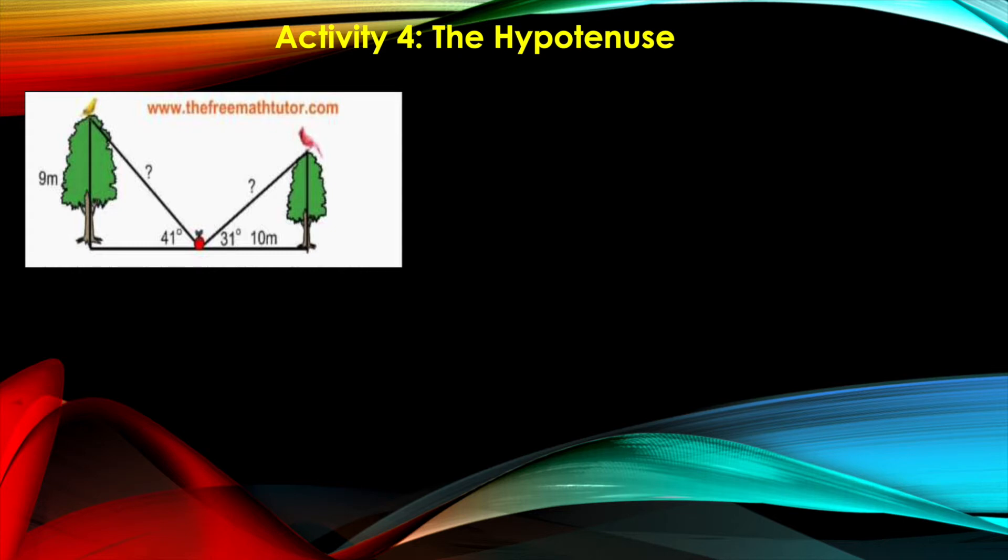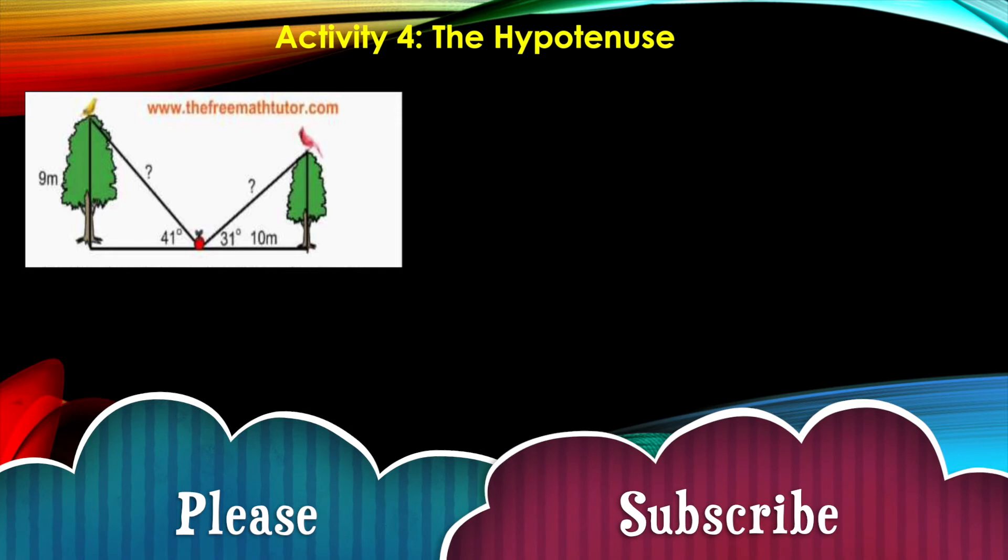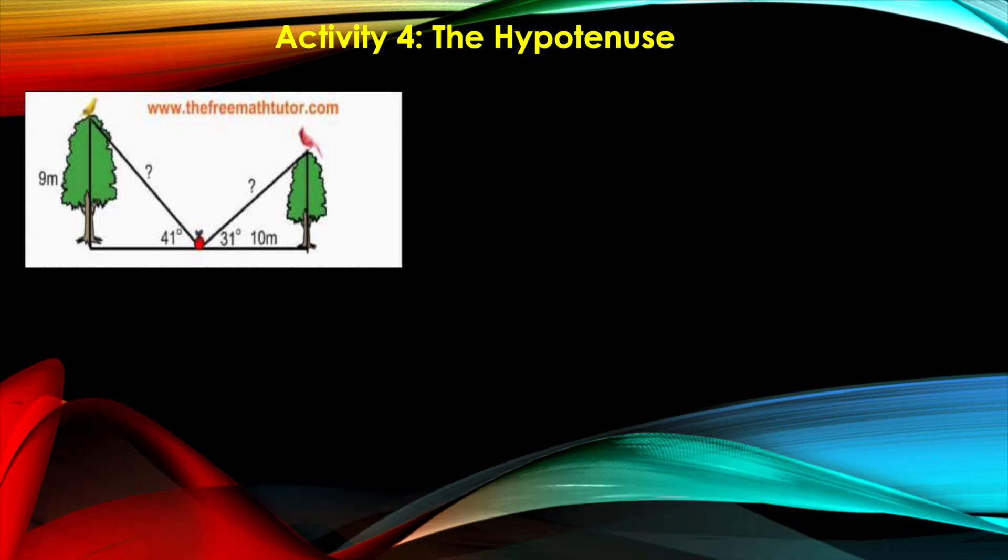If you look at the diagram, there are two right triangles here: the bigger right triangle and the smaller right triangle. The diagonal line with the question marks are actually our hypotenuse, and that is what we're going to calculate.